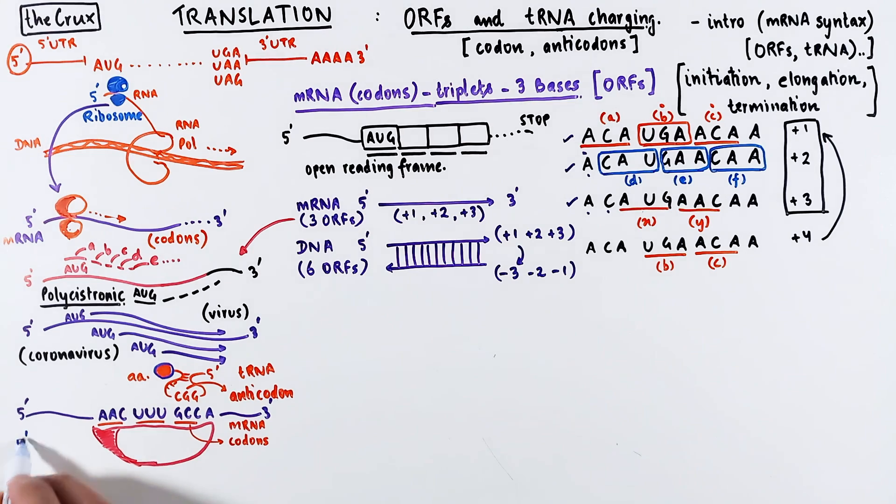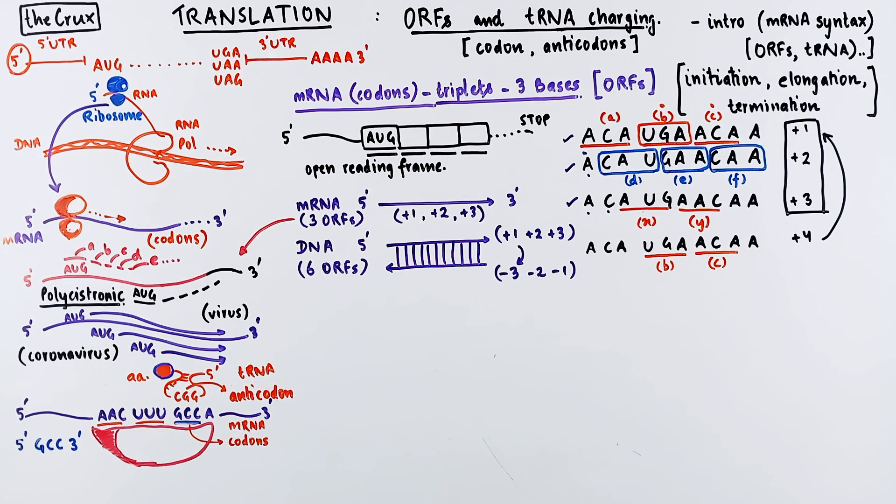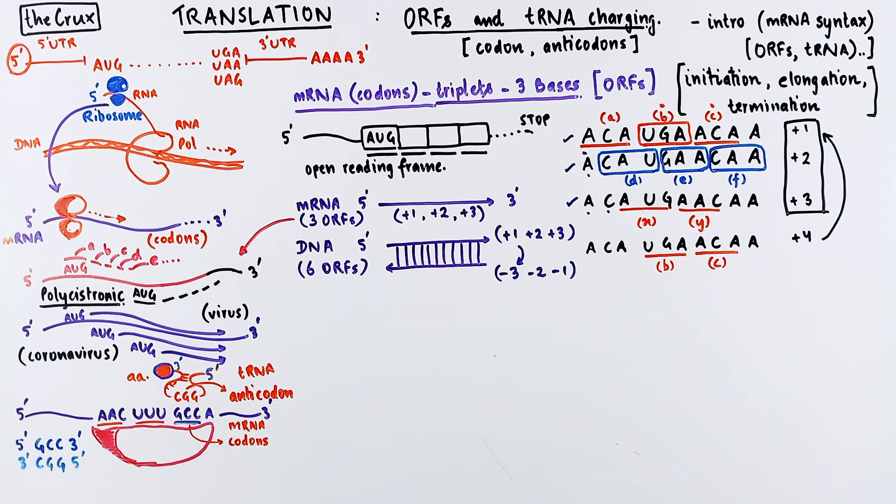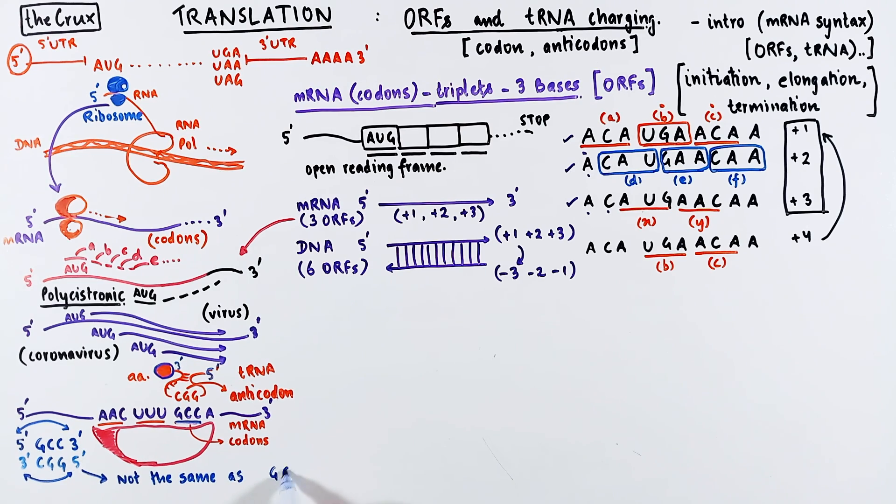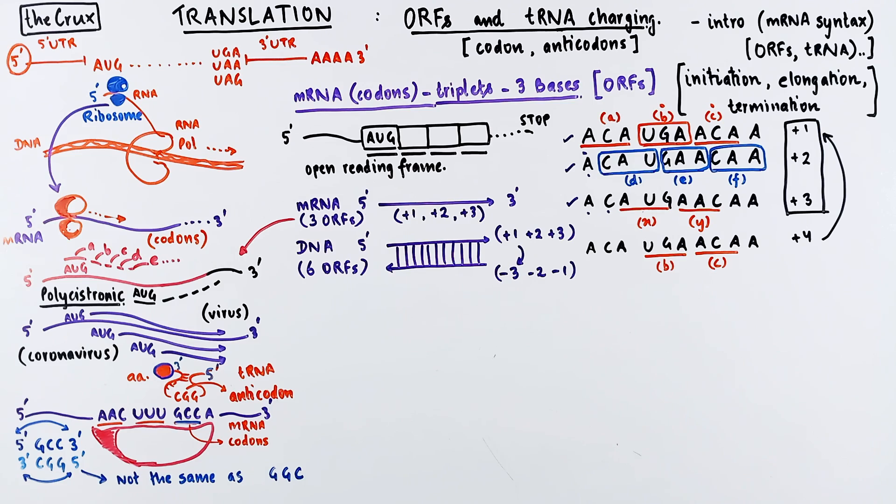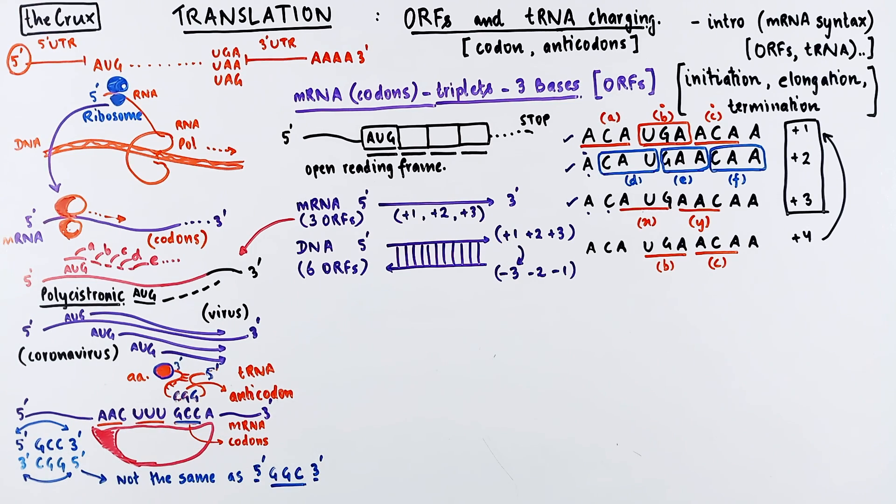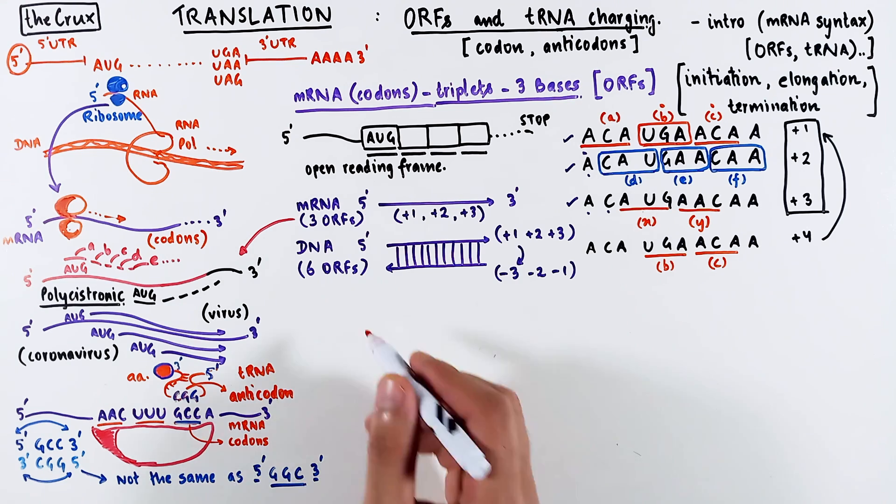Now let's get a little more concrete. Say we take this GCC codon. Now notice that the transfer RNA goes in the opposite orientation. So you get CGG in the opposite orientation. So you have to notice that codons are written 5' to 3' and anticodons are written 3' to 5'. So the 3' CGG to 5' cannot be written as GGC in 3' to 5'. But if you specify that it is in the form of 5' to 3' then it makes more sense, which is the same as 3' CGG to 5'. If you're confused at this point, I recommend working out the orientation on a piece of paper by yourself.